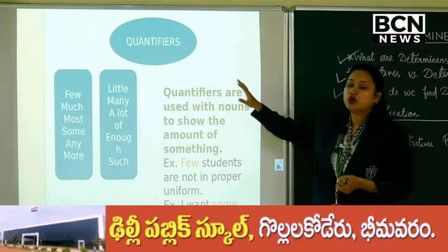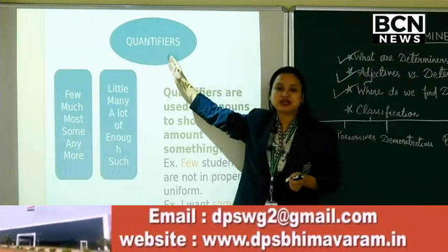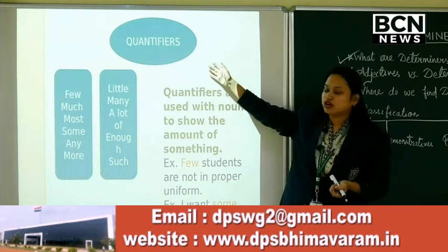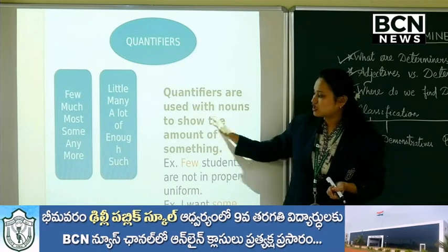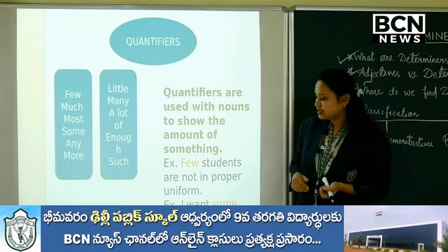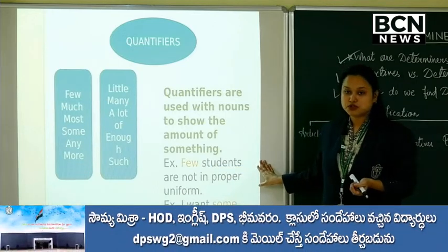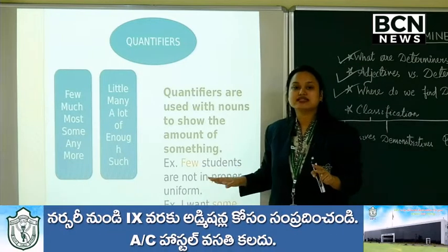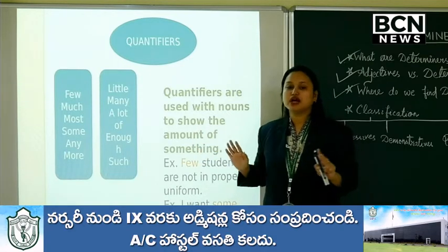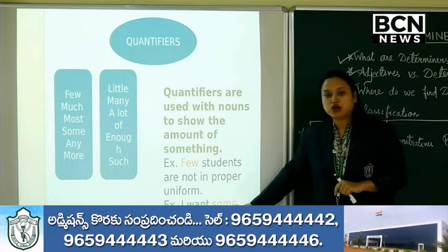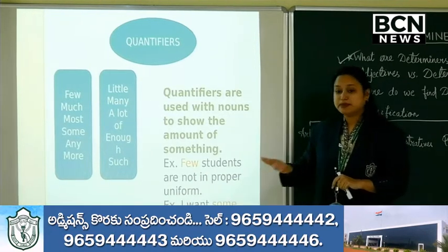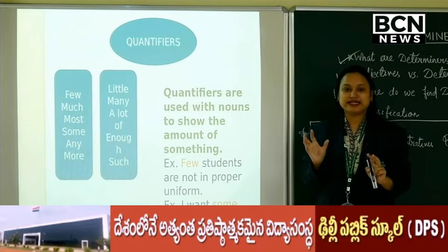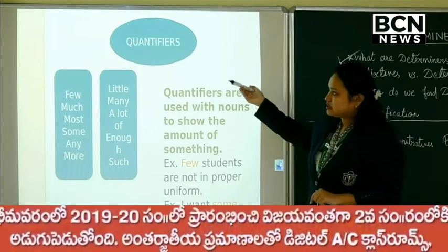Next, we have quantifiers. The name itself says quantity — quantity means amount of something. Some coffee, little coffee, much coffee — we are talking about amount. Quantifiers are used with nouns to show the amount of something. For example: few students are not in proper uniform — few students means some students, a few number who are not in uniform. I want some sugar — some sugar means I don't want much, not 5 kilos or 10 kilos, just some sugar, a little amount.